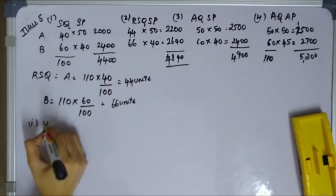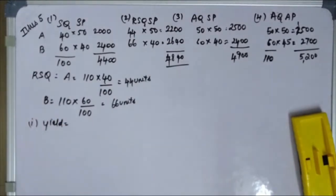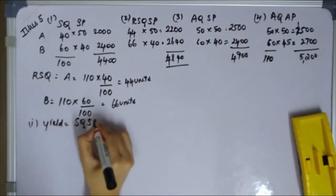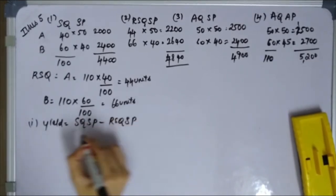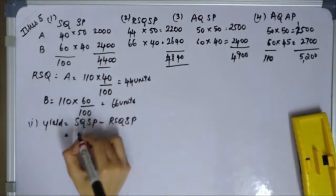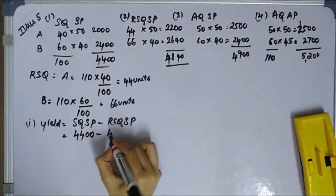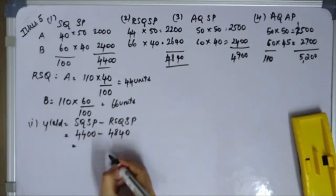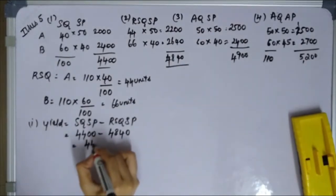First variance: Material Yield Variance = SQ×SP minus RSQ×SP = 4,400 minus 4,840 = 440 rupees Adverse.